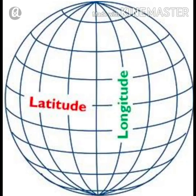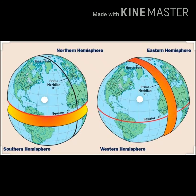Latitudes are the slanting lines from east to west and longitudes are the standing lines from north to south, and both are imaginary lines. As the equator is the mid-latitude and the largest latitude of the earth, it divides the earth into two equal parts — the upper portion as the Northern Hemisphere and the lower portion as the Southern Hemisphere.